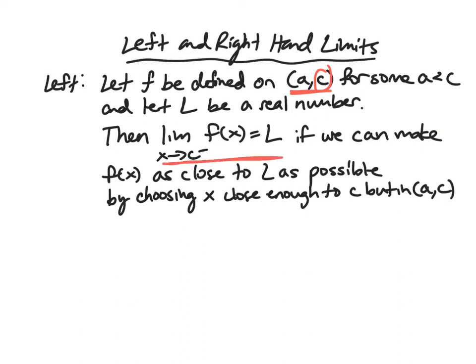So that's how you would read this statement. If we can make f(x) as close to L as possible by only choosing x close enough to C that are left of C.